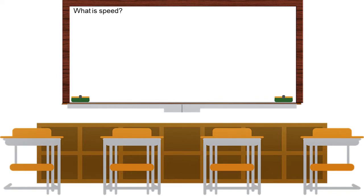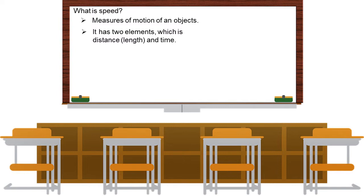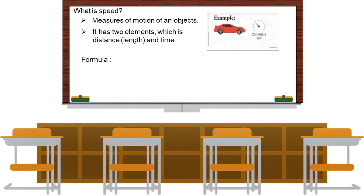So what is speed? Speed is a measure of the motion of an object. It has two elements: distance and time. To get the speed of an object, here is the formula: Speed is equal to distance over time, or you can write it as S = d over t.